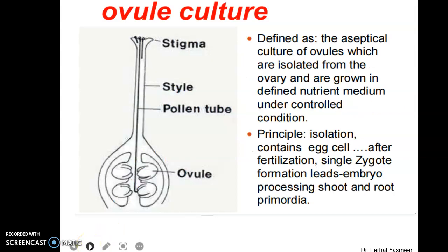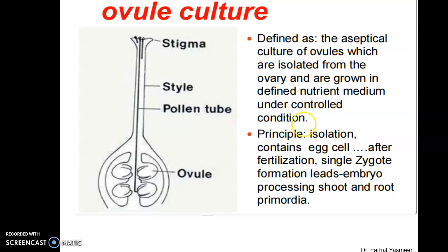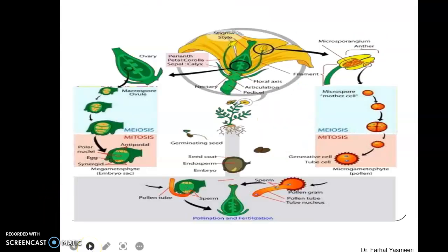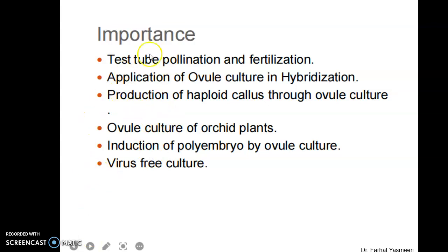Ovule culture is the aseptic culture of ovules isolated from the ovary and grown in a defined nutrient medium under controlled conditions. Isolation is done from structures containing egg cells, and after fertilization, single zygote formation leads to embryo development and root primordia. Here is a pictorial overview of ovule culture, indicating how ovules are used in this process.